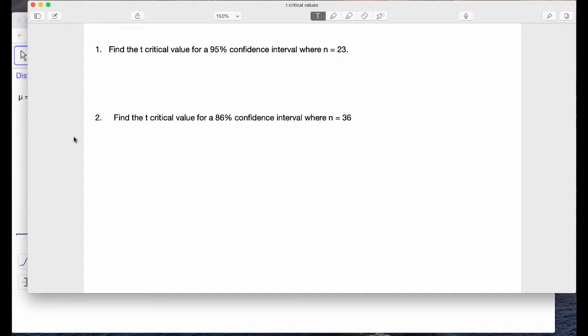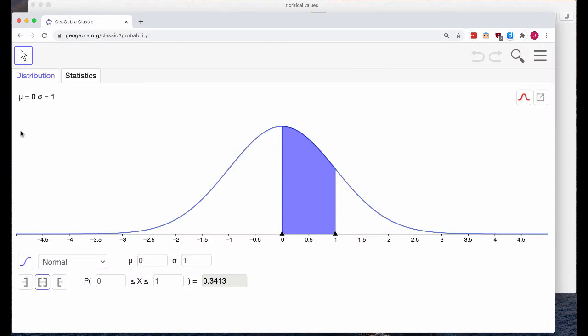So first, let's go to GeoGebra because we're going to use that to find our critical values. Go to geogebra.org/classic#probability.